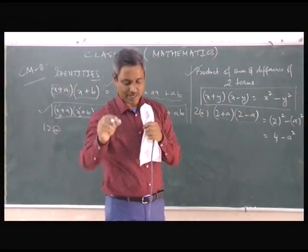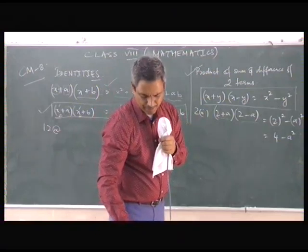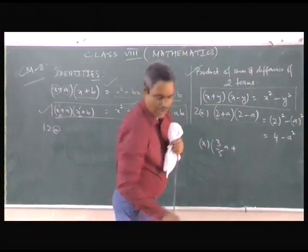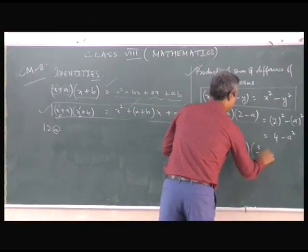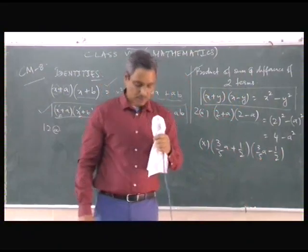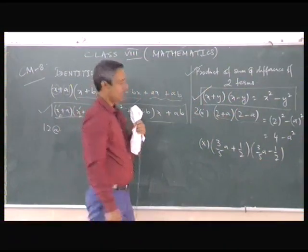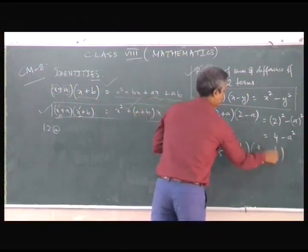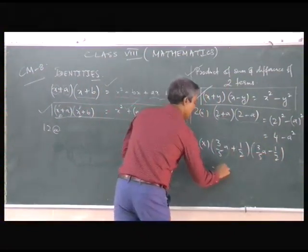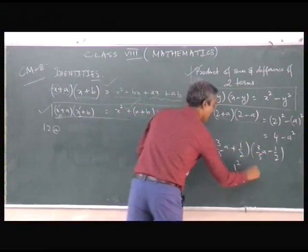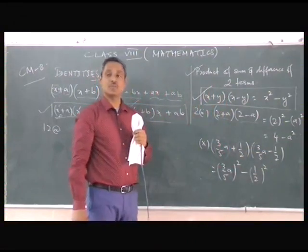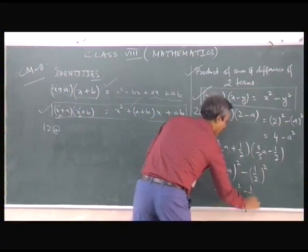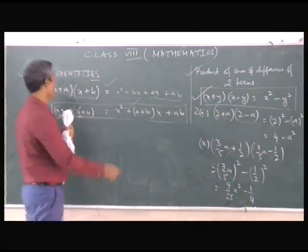Part 10: (3/5 a + 1/2) into (3/5 a − 1/2). If you look at that question you will see we can use the same identity — it is the product of the sum and difference of the same two terms; the first term is the same, the second term is the same, one plus and one minus. So: (3/5 a)² − (1/2)² = 9/25 a² − 1/4. That is your final answer.